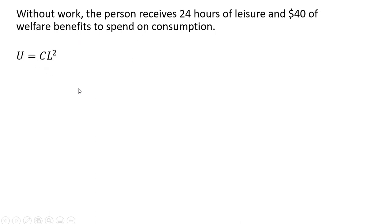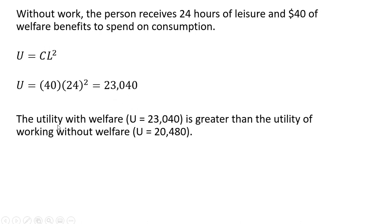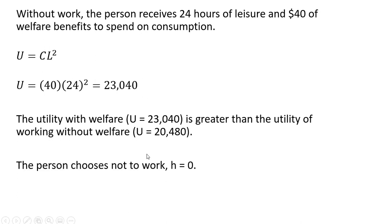Here's our utility function. Plugging in 40 for C and 24 for L, the person receives a utility of 23,040. We notice that the utility with welfare is greater than the utility of working without welfare. So the person chooses not to work — the utility maximizing hours of work equals zero.